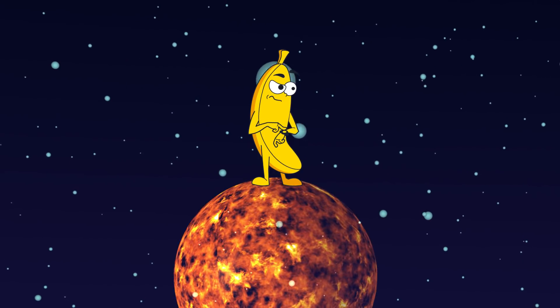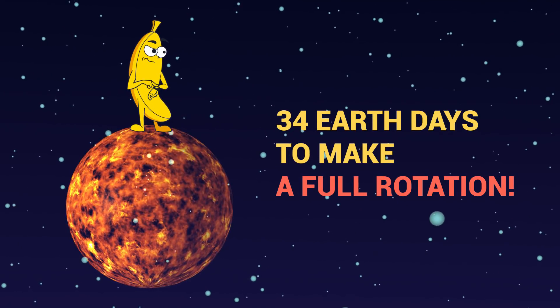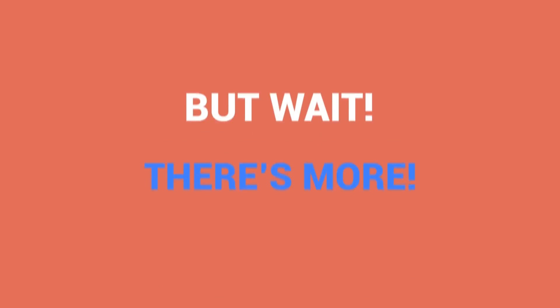But, if you were standing on one of the sun's poles, it would actually take 34 Earth days to make a full rotation. Science. But wait, there's more.